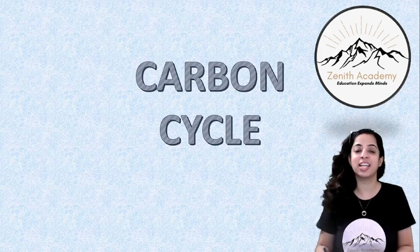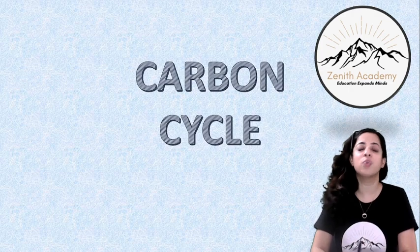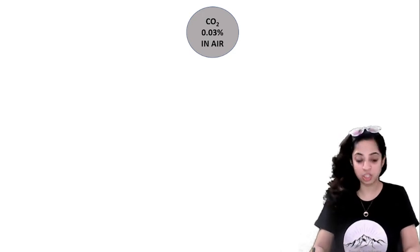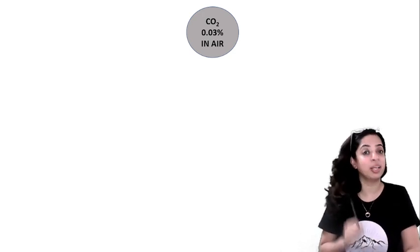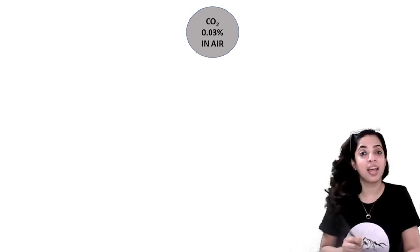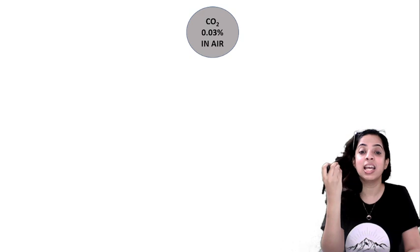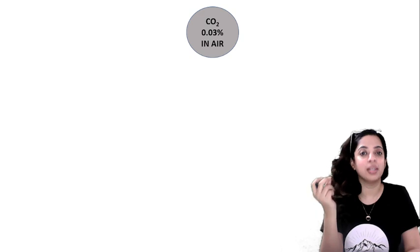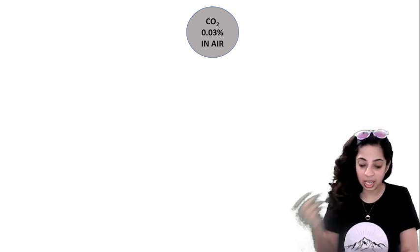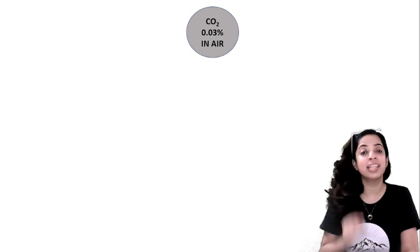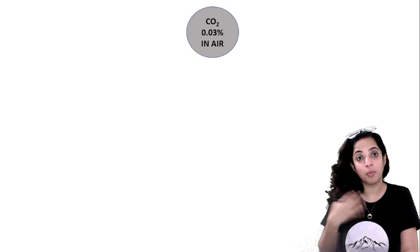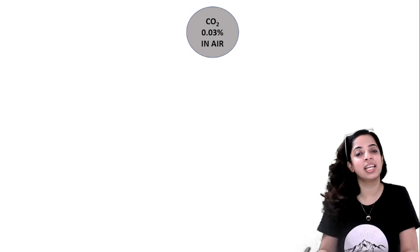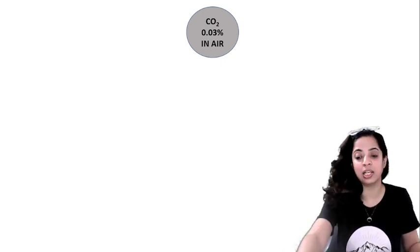Hello, my dear students and welcome to Zenith Academy Online. Today we are going to do a very important topic: the carbon cycle. The carbon cycle is the series of chemical reactions in which the carbon element from CO2, which is present in the atmosphere at 0.03 percentage, is removed from the air, used by living organisms like plants and animals for their body processes, and then returned back to the atmosphere.